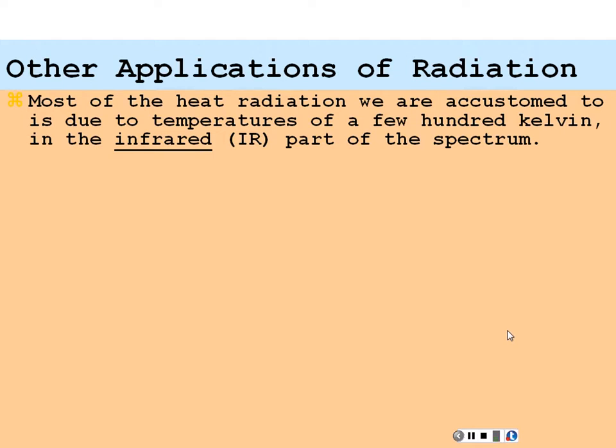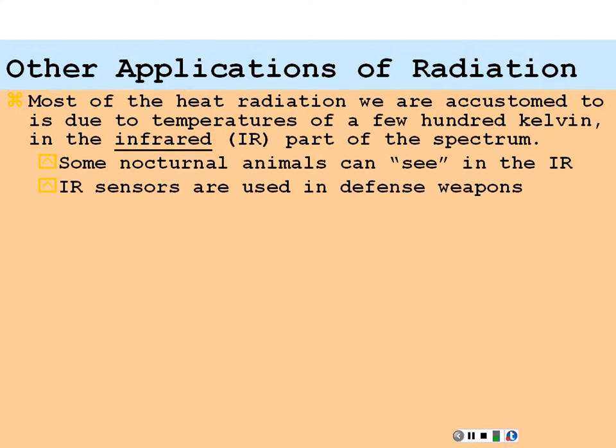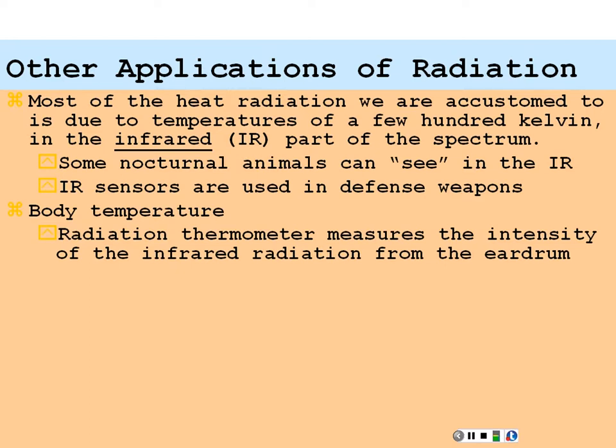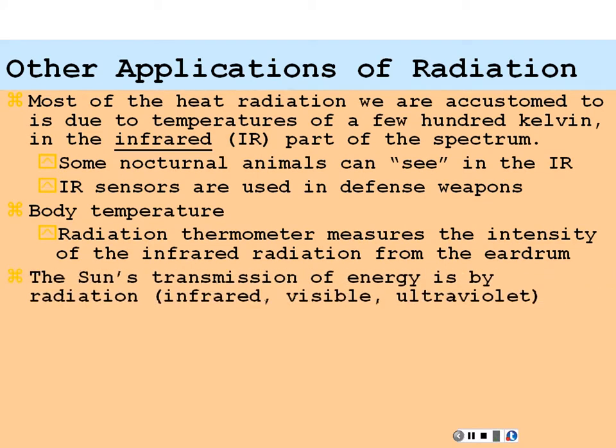Other applications of radiation. Most of the heat radiation we are accustomed to is due to temperatures of a few hundred kelvin in the infrared part of the spectrum. Some nocturnal animals can actually see in the infrared and we can't. We don't need it to survive so we were not adapted to that but some nocturnal animals can do that. Infrared sensors are also used in defense weapons since many weapons can be hot. Body temperature radiation thermometer measures the intensity of the infrared radiation from the eardrum and measure your temperature as a result. The sun transmits energy in different forms of electromagnetic radiation: in the infrared which you can't see, in the visible which is most of the sun's radiation which we're much accustomed to, and in the ultraviolet which is above the frequency that we can see.